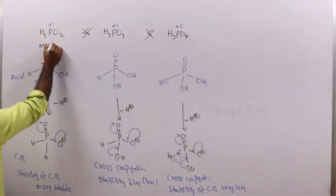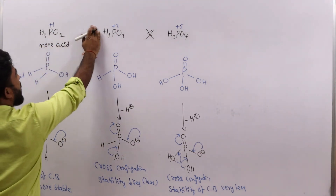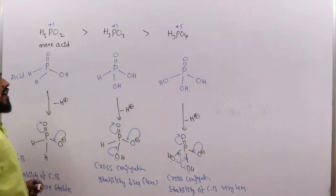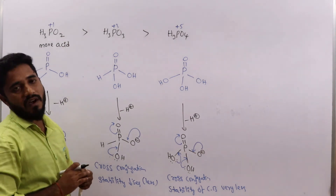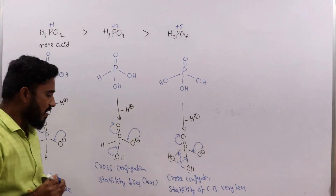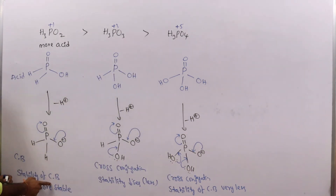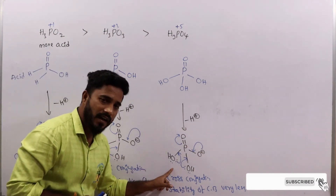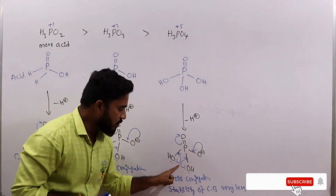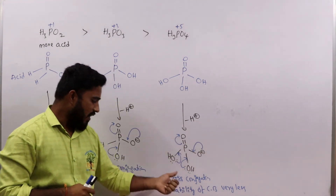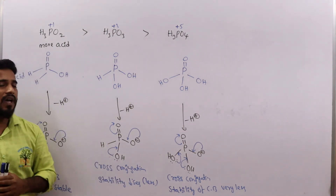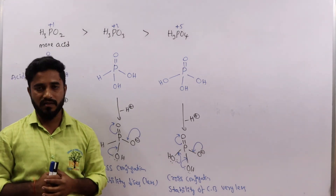Therefore, the correct acidic order is H3PO2 is more acidic than H3PO3, which is more acidic than H3PO4. We cannot explain this order based on oxidation state alone, but we can explain it based on conjugate base stability. H3PO2 has no cross conjugation, H3PO3 has cross conjugation from one oxygen's lone pairs, and H3PO4 has cross conjugation from two oxygens' lone pairs, giving it the least stable conjugate base and lowest acidic strength.